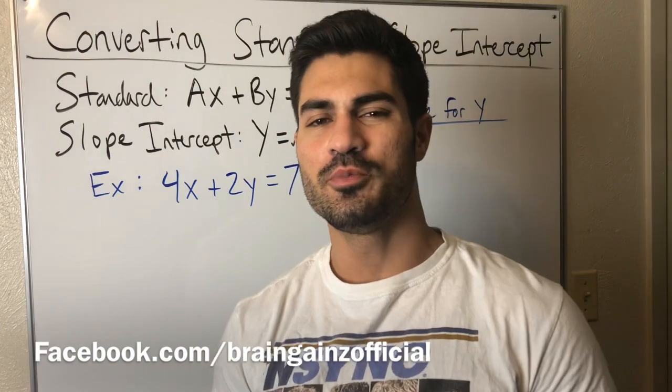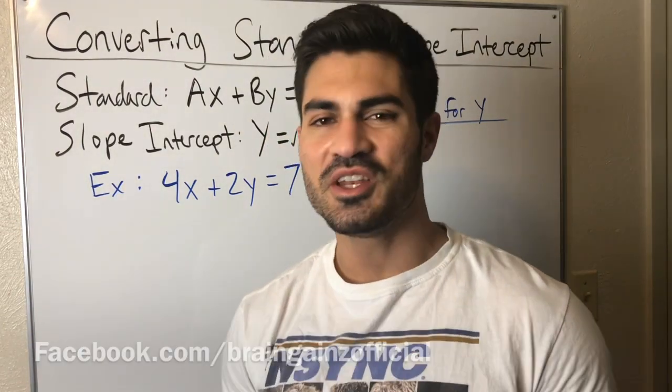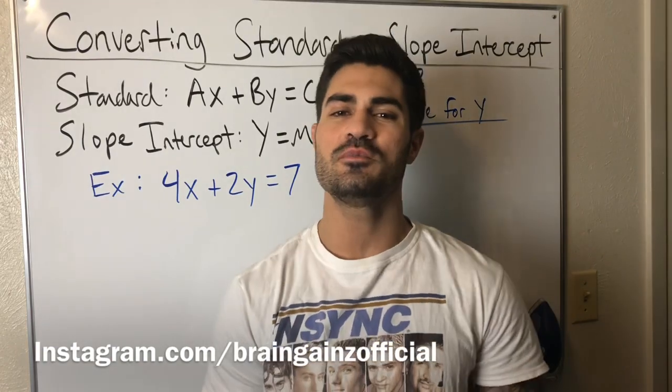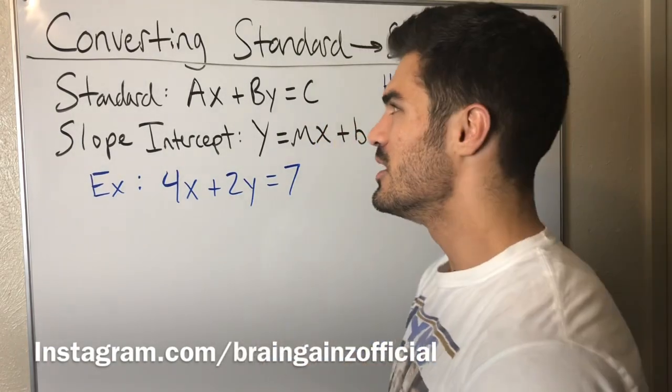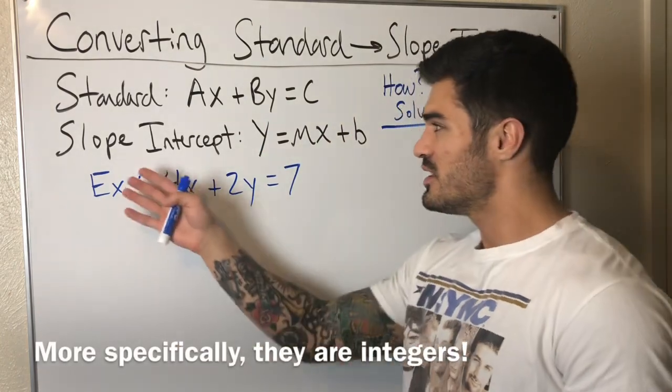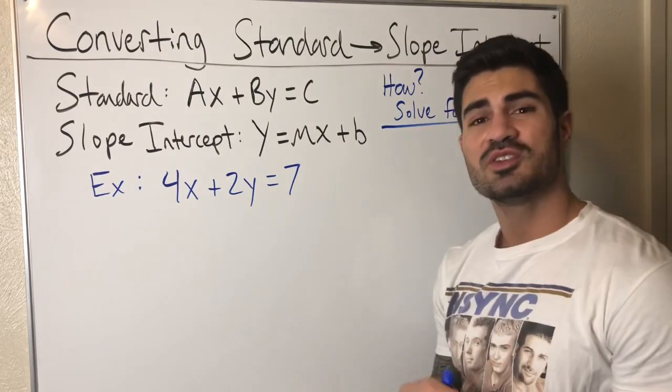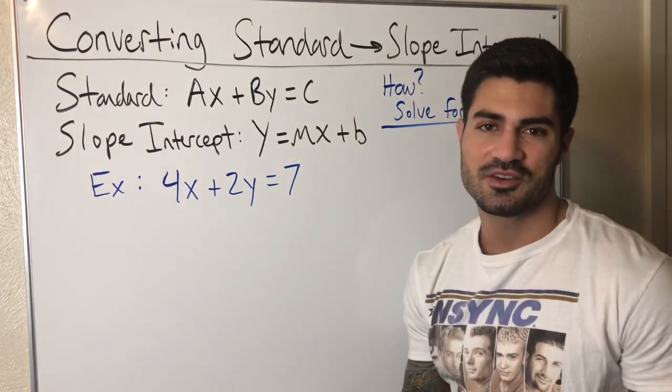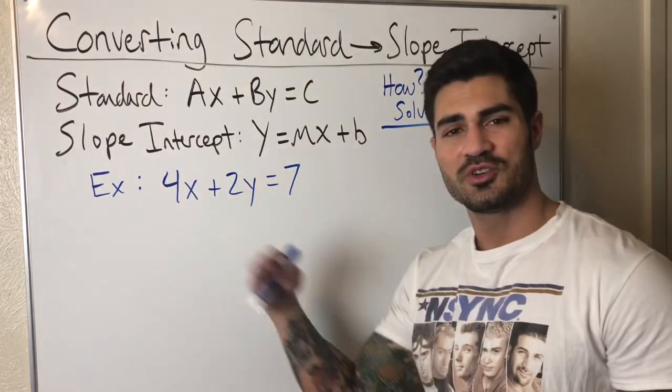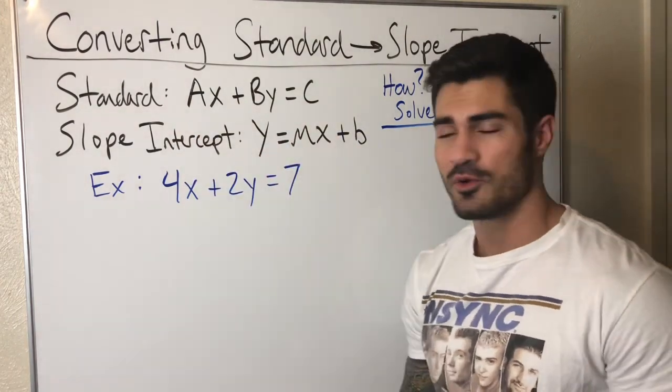Hello everybody, welcome to another video. If you're ready to flex those brain muscles, today we're going to convert some linear equations from standard form to slope intercept form. So this is standard form, Ax + By = C, where A, B, and C are just constants. And this is slope intercept form, Y = MX + b, where M and B are constants, but M is our slope and B is our y-intercept. That's why it's called slope intercept form.